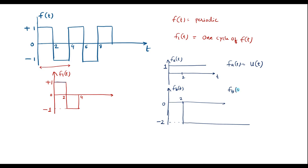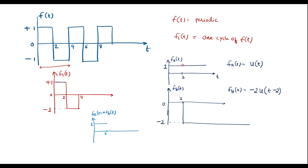So f_b(t) = −2 · u(t − 2), a step signal shifted by 2 units. For understanding, if I add fₐ(t) with f_b(t): the signal comes up at t = 0, then at t = 2 the magnitude is 1 plus (−2) = −1, so the signal drops from 1 to −1. The result of fₐ(t) + f_b(t) looks like the first portion of f₁(t).